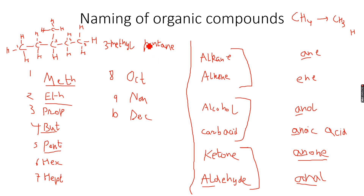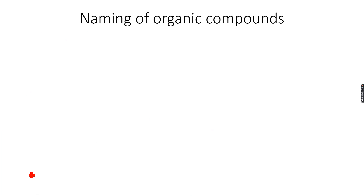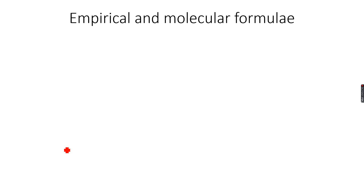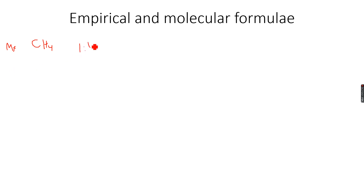Now let's move forward to empirical and molecular formulas. You're already aware of what these are, so let's do a quick recap. The empirical formula gives the simplest whole number ratios of the atoms present in the molecule. For example, methane has the molecular formula CH4 - this is the actual formula. The ratio of carbon to hydrogen is 1:4, and since this is the simplest ratio, the empirical formula is also CH4.